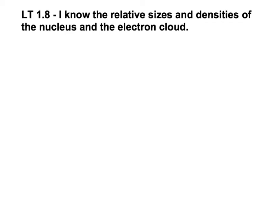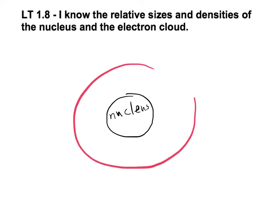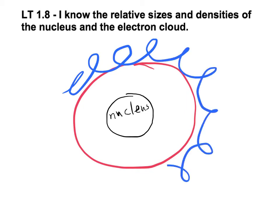So, a basic model of an atom has the nucleus in the middle, and outside of it, in this general area, all around here, is the electron cloud.